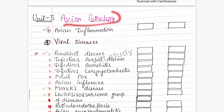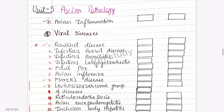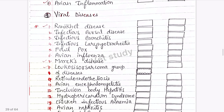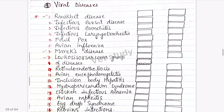Our last unit in this section is Avian Pathology. Avian inflammation will be asked to define. For viral diseases in poultry: Avian Bird Flu (very important), Infectious Bursal Disease (IBD), and Marek's disease are the most important — please remember them properly. Infectious bronchitis is not so important but remember its etiology. Infectious laryngotracheitis, Fowlpox, and Avian Influenza are also important.